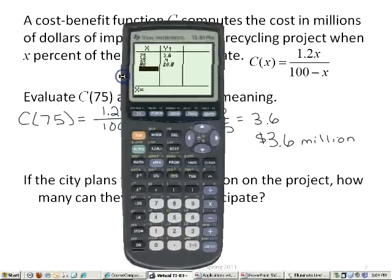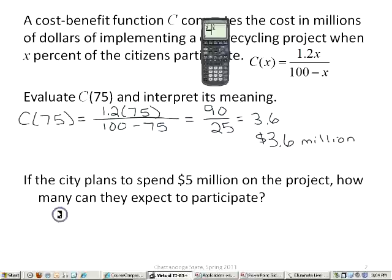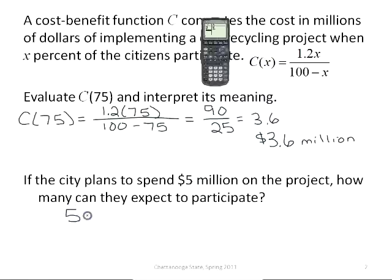Now let's go on to the next question. If the city plans to spend $5 million dollars on the project, how many can they expect to participate? So this time, the number that we know is how much they're going to spend on the project. So that's the cost. That's the C of x. So what we actually have for this equation is 5 equals 1.2x over 100 minus x.